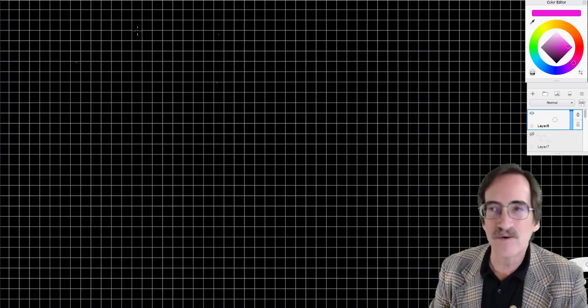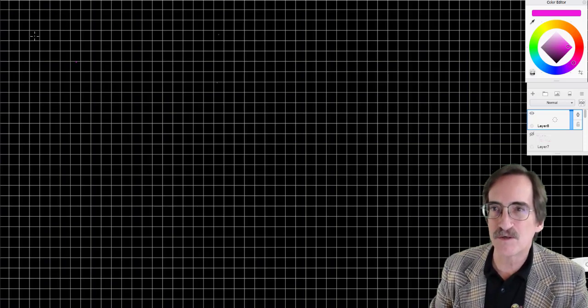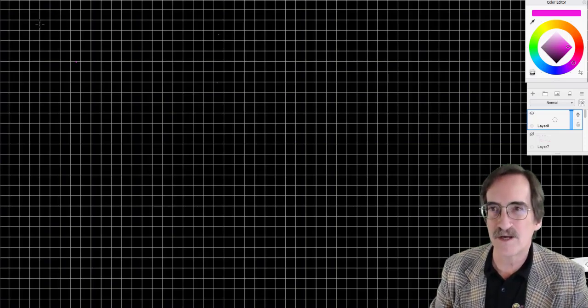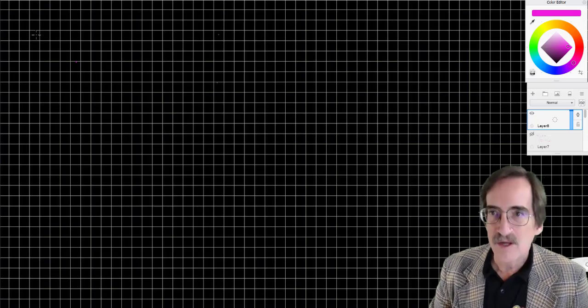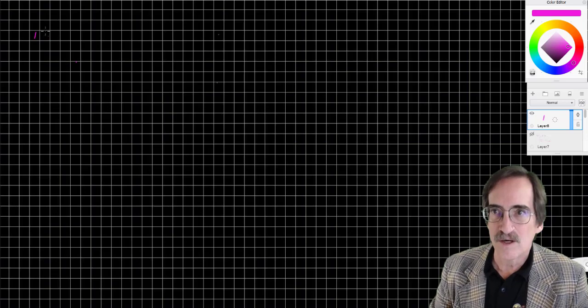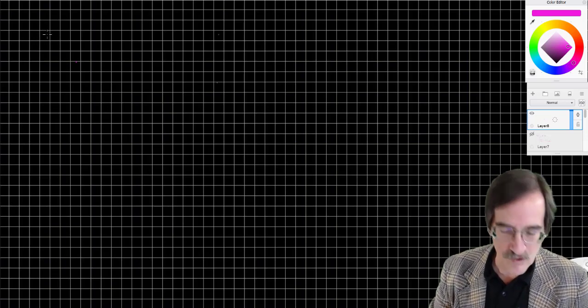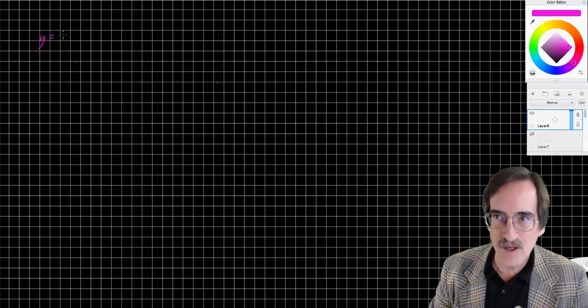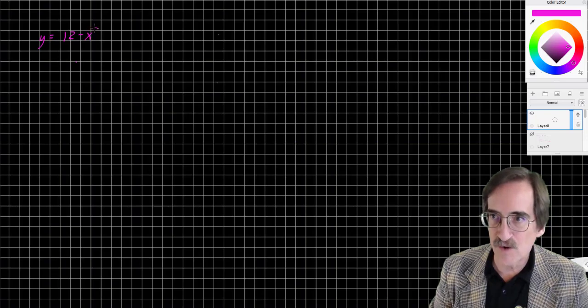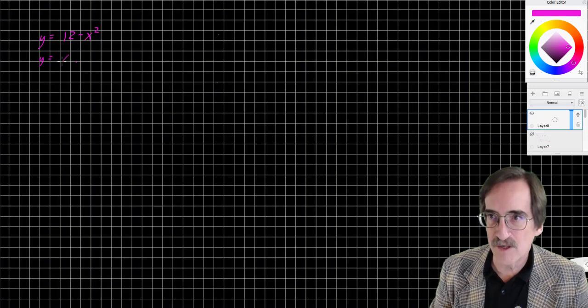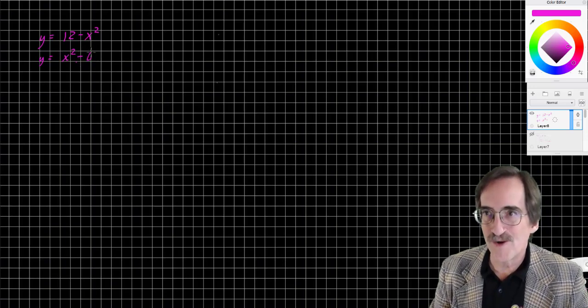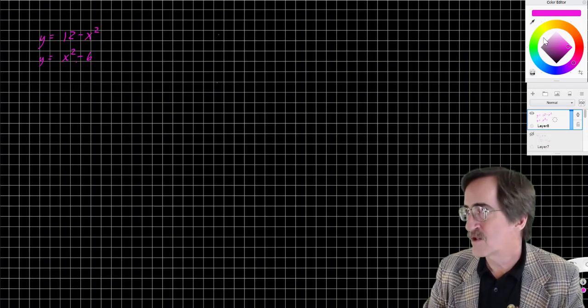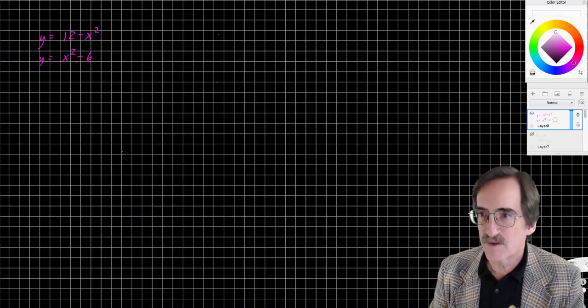We're going to find the area encompassed by two curves a couple of ways. I want to demonstrate the various techniques that can be used. So here we go. Y equals 12 minus x squared and y equals x squared minus 6. We know these are quadratic, so they are parabolas.